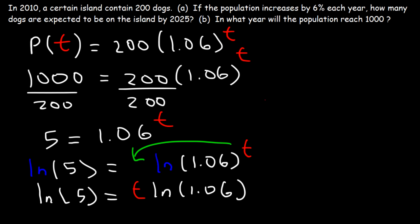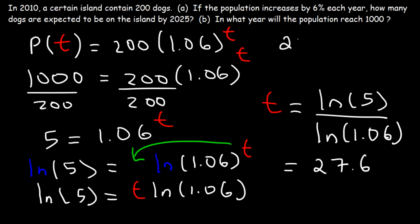So ln of 5 is equal to T times ln of 1.06. So in order to solve for T, we need to divide both sides by ln 1.06. So it's going to be the natural log of 5 divided by the natural log of 1.06. And so T is about 27.6. So 27 years later. Starting from 2010, 27 years later is the year 2037. So the population is going to reach 1,000 in the year 2037. So sometime between 2037 and 2038.